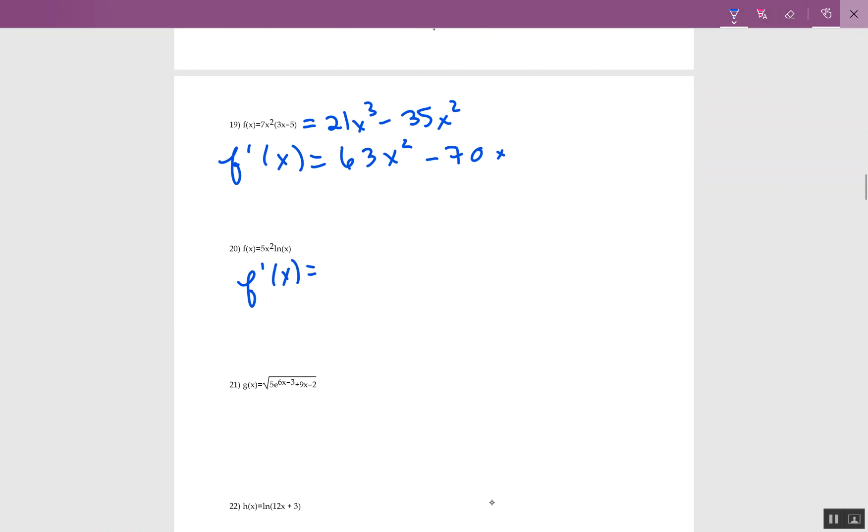So when I do the derivative, let's start with the 5x squared. It's 10x. Keep the natural log of x. Then you say plus. You go back to 5x squared. And then you multiply by the derivative of ln, which is 1 over x.